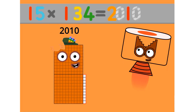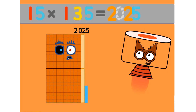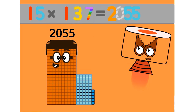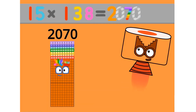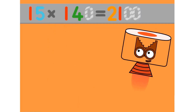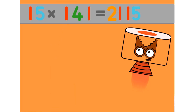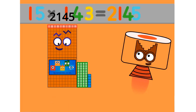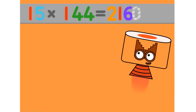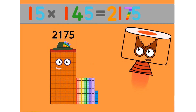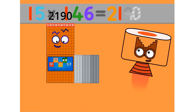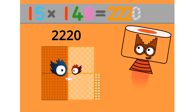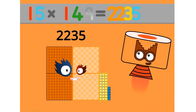15 x 111 equals 1665. 15 x 112 equals 1680. 15 x 113 equals 1695. 15 x 114 equals 1710. 15 x 115 equals 1725. 15 x 118 equals 1770. 15 x 119 equals 1785. 15 x 120 equals 1800. 15 x 121 equals 1815.